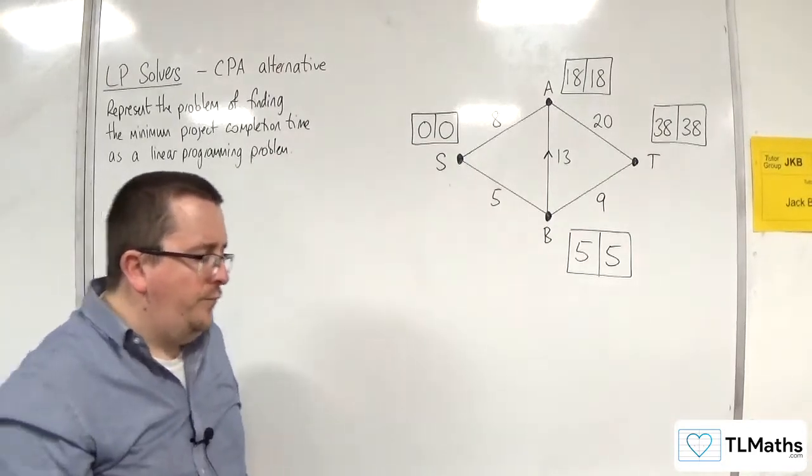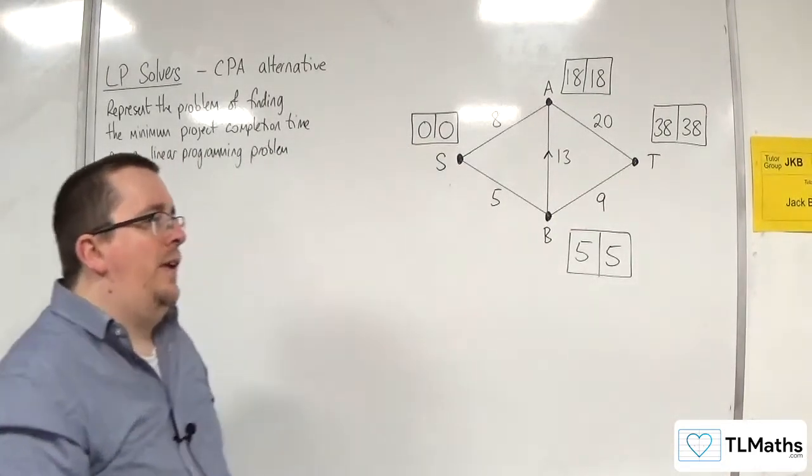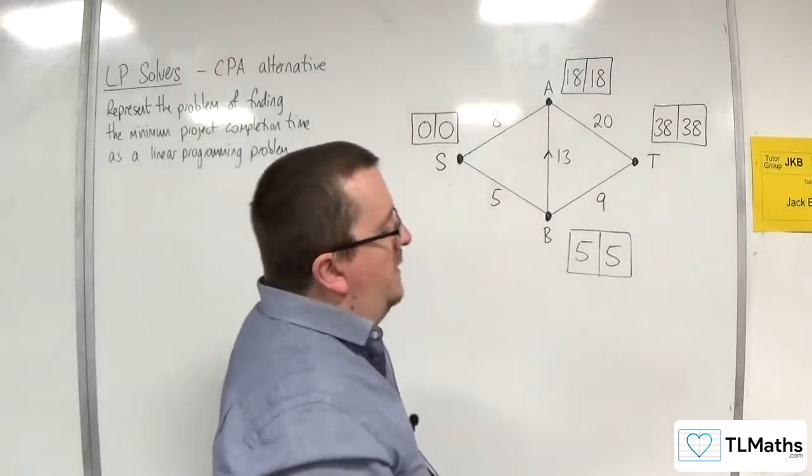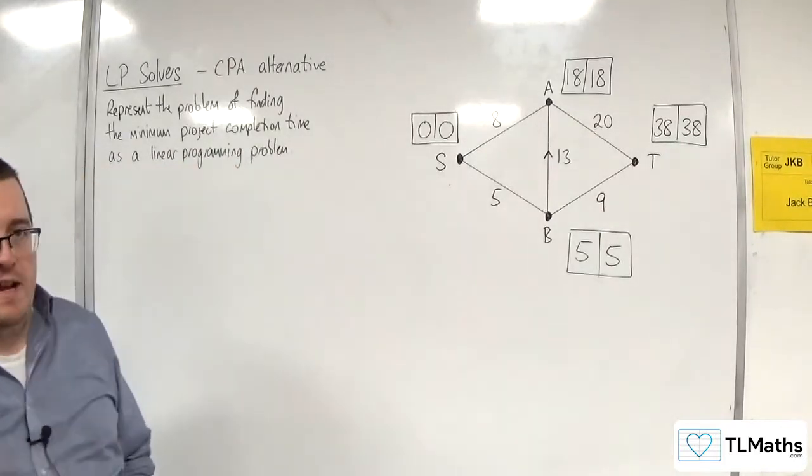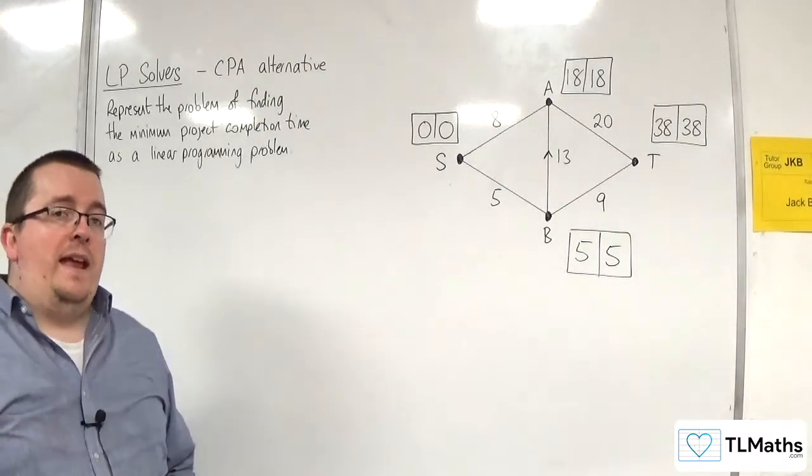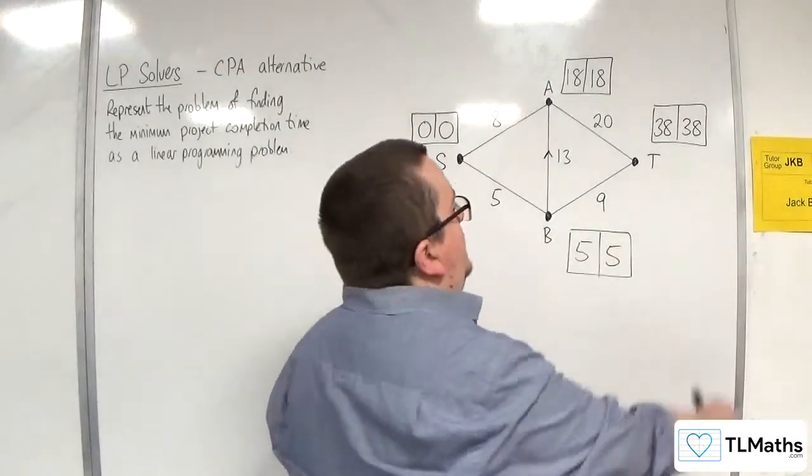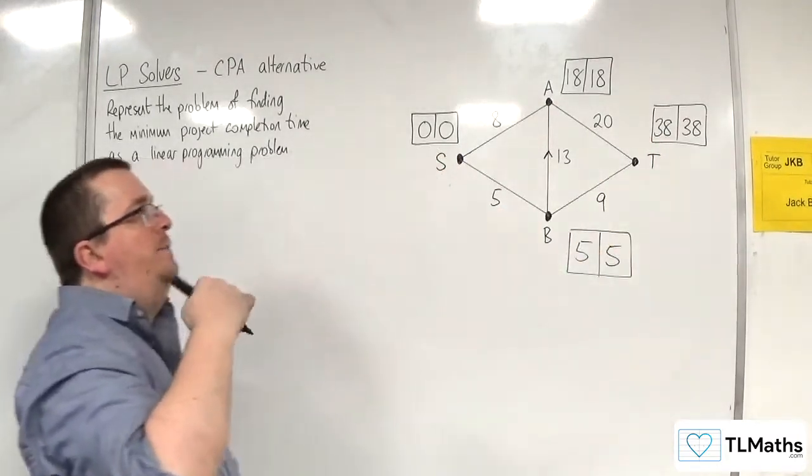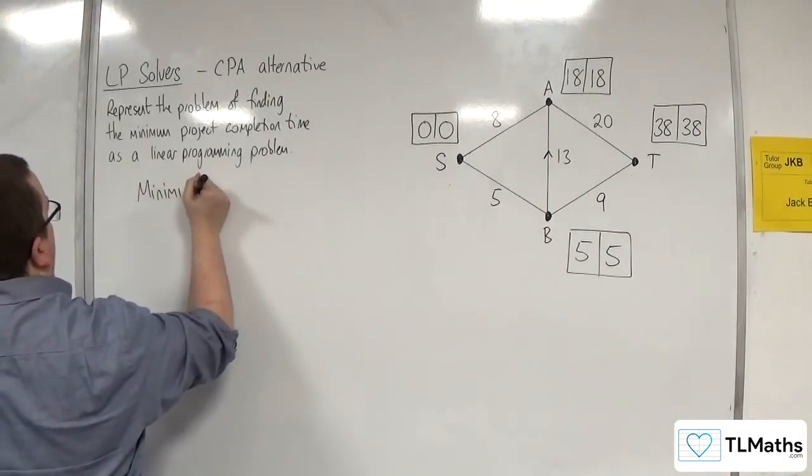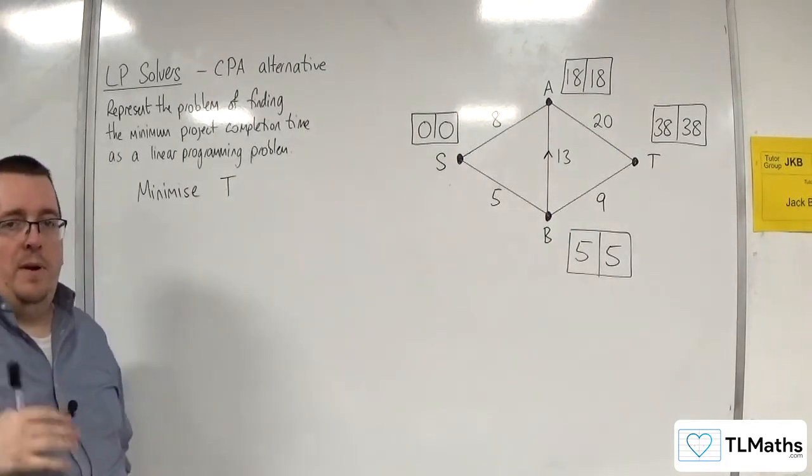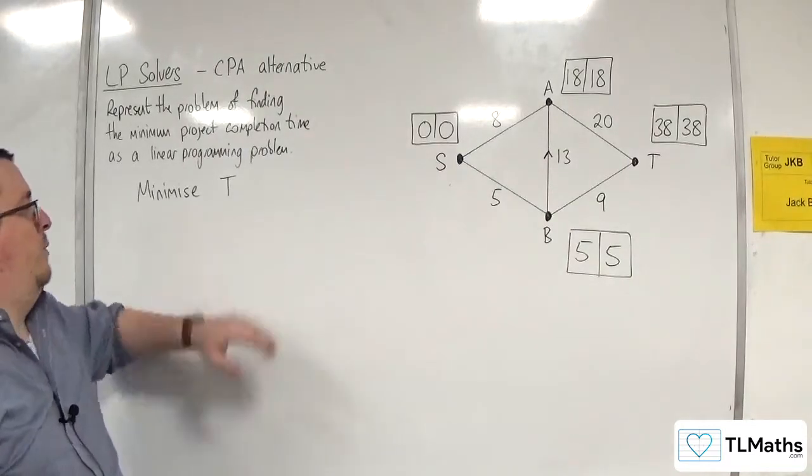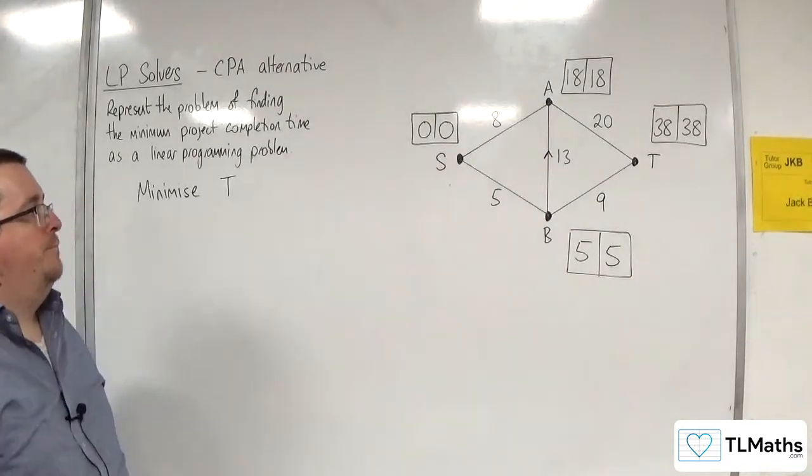So how can we formulate this as a linear programming problem? Well, what we want to do is essentially we want to minimize the value that is at the end vertex. So the end vertex here has a value of 38 that we've just worked out. So we would want to minimize T. Because we want to complete the job in the smallest amount of time, least amount of time. So we want to minimize the value that's at T, at the end value.